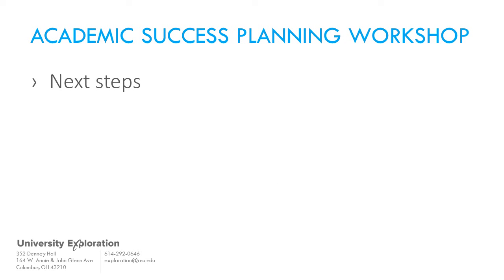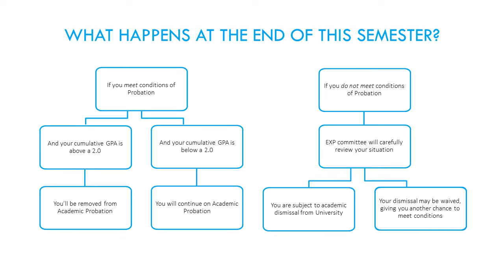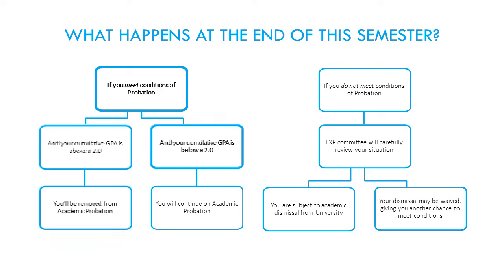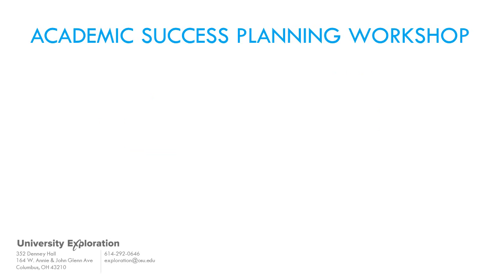Now that you have a better understanding of probation and some strategies to help you meet the conditions of your probation, let's discuss what happens next. At the end of this semester, University Exploration will review your grades and academic record and you'll be notified of one of three possible outcomes. First, if you have met the conditions of probation and your cumulative GPA is above a 2.0, you could be removed from probation and be in good academic standing. Second, if you have met the conditions of probation but your cumulative GPA is still below a 2.0, you could be continued on academic probation. Third, if you have not met the conditions of probation, if you have below a 2.3 semester GPA, if you took more than 15 hours, or if you earned any incompletes, you would be eligible for dismissal from the university. If you're at all concerned about meeting the conditions of probation, you need to contact your academic advisor to explain the situation.